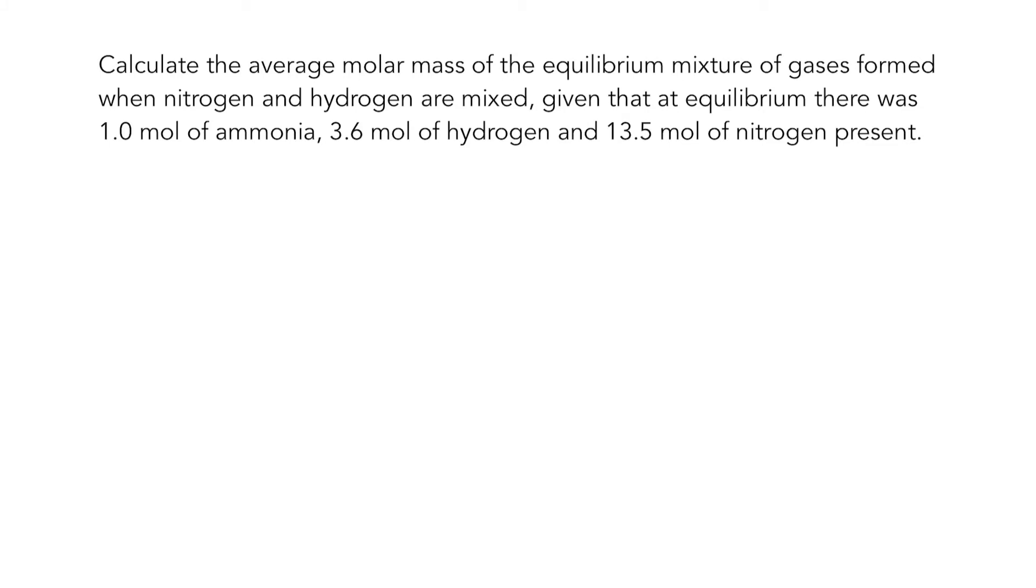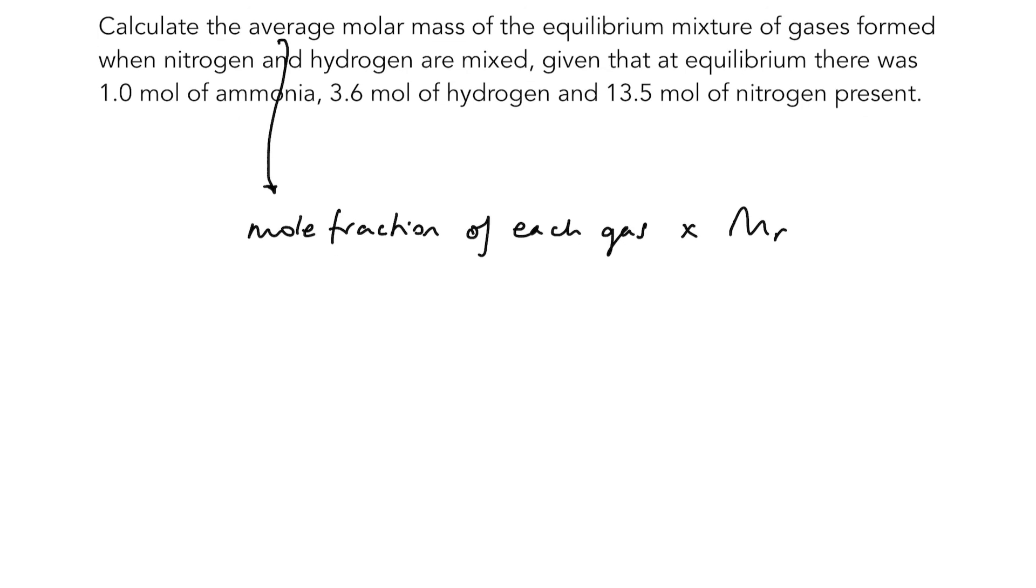The average molar mass is simply comprised of the mole fraction of each gas times its molar mass. So let's write that down: it is the mole fraction of each gas times by its molar mass, and then we're going to add each of those together. This works on the same principles as working out the partial pressure for a gas in a mixture. So let's start with ammonia.